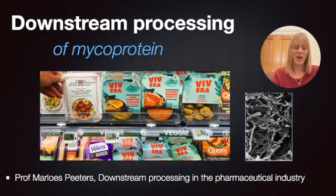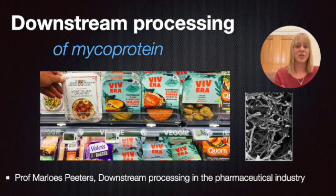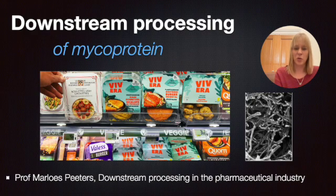Last time I asked people what kind of video they wanted to see, and there was an overwhelming majority for a video related to the playlist on downstream processing in the pharmaceutical industry. So this video will discuss the downstream processing of microprotein, which you might commonly know as being used in Quorn - it's used as a meat substitute.